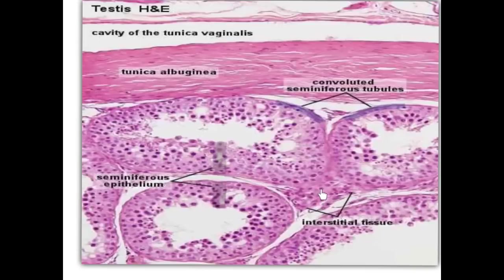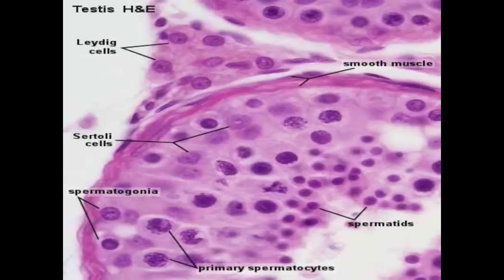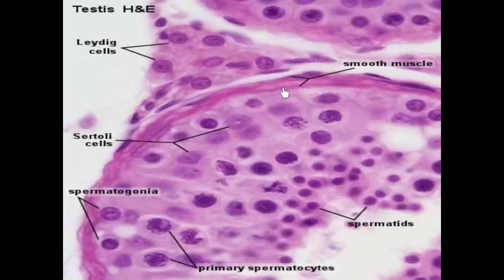In between, we have the interstitial tissue that contains the interstitial cells of Leydig as well as fenestrated blood capillaries. Here is a picture showing the interstitial cells of Leydig and parts of two seminiferous tubules. Starting with the seminiferous tubule, you will see oval or flat nuclei belonging to the myoid cells. These myoid cells are flattened contractile cells, and their contraction helps the propulsion of spermatozoa towards the rete testis. We also have a basement membrane beneath the myoid cells.